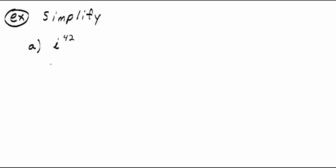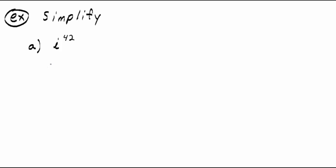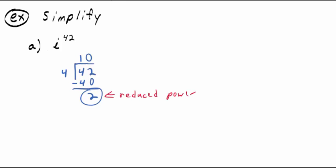We can reduce any power of I. Simplify I to the 42nd power: take 42, divide by 4. Four goes into 42 ten times — 4 times 10 is 40 — and the remainder is 2. That's the reduced power, so I to the 42nd equals I squared. But what's I squared? Negative 1. So believe it or not, I to the 42nd power is just negative 1.